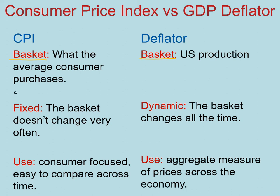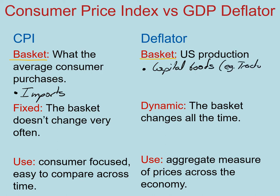The average US consumer does buy imports. Imports will not be counted in the GDP deflator. On the other hand, on the deflator, you will include a lot of different products that the average consumer does not buy. A prominent example is capital goods — a tractor, for instance. The average US consumer does not buy tractors, and therefore it will not be in the CPI, but we can find it in the GDP deflator.